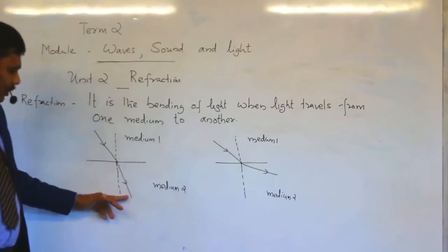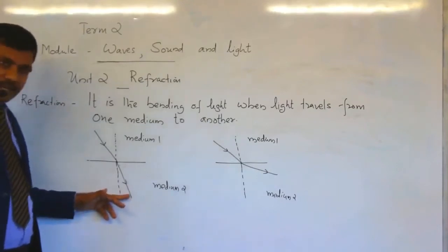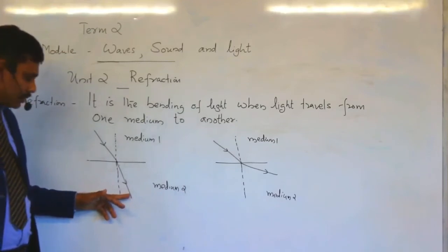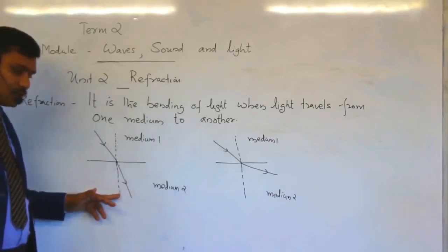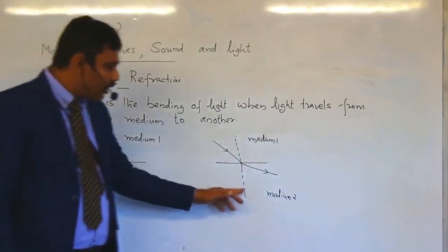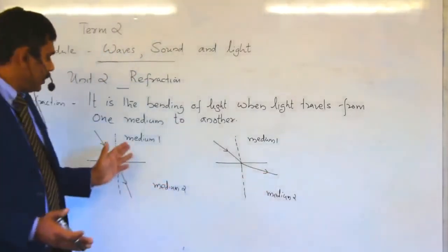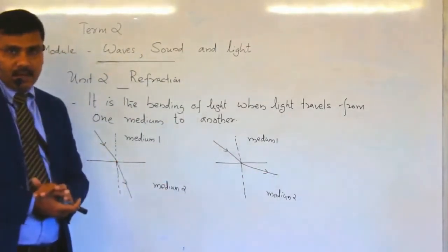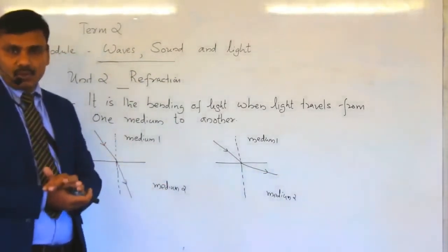In this diagram, this is the refracted ray. The refracted ray can be toward the normal or away from the normal. These refracted rays are deviating from the original path.